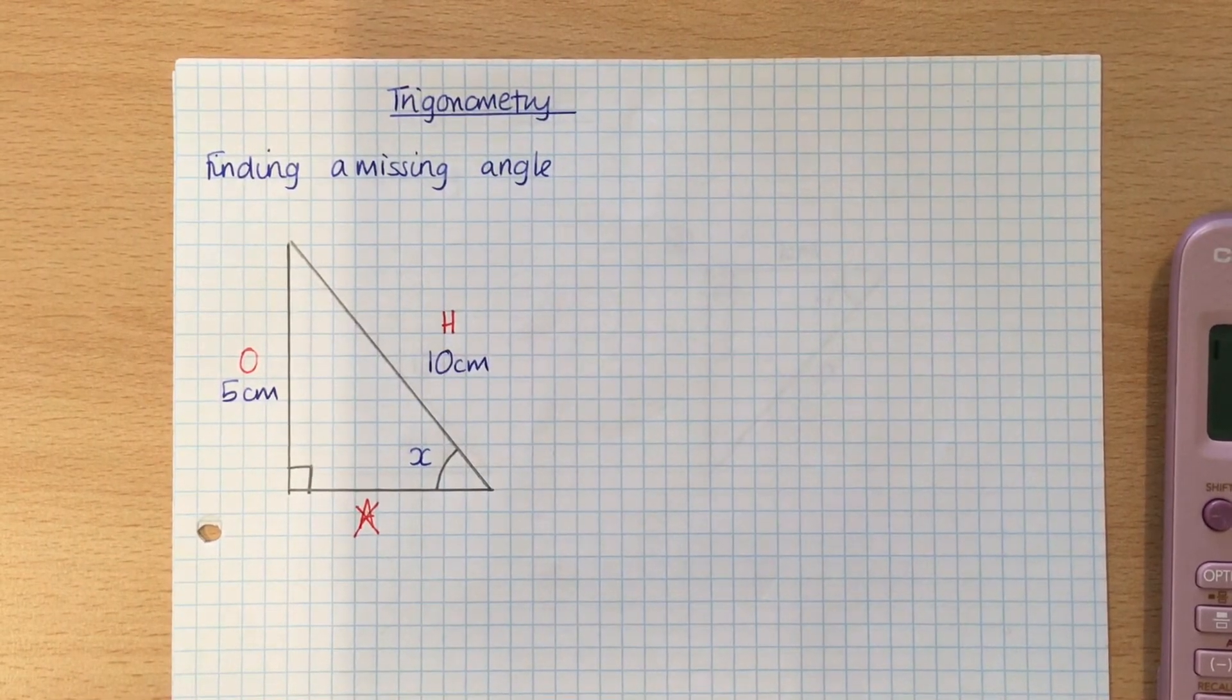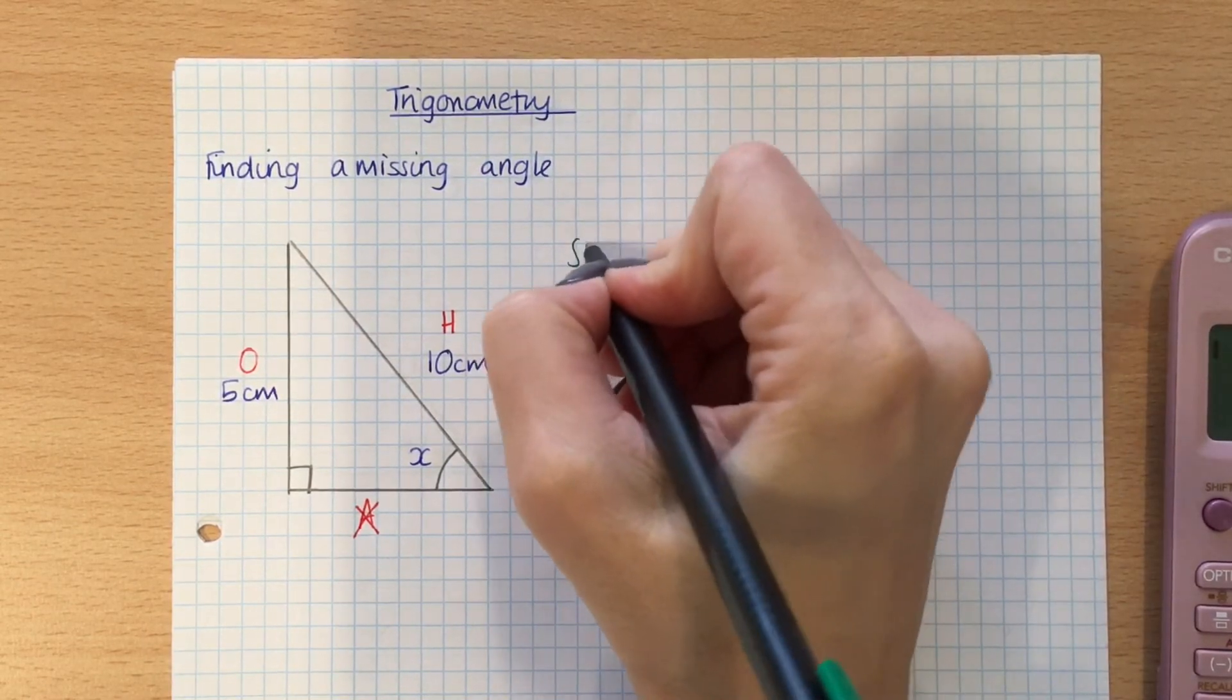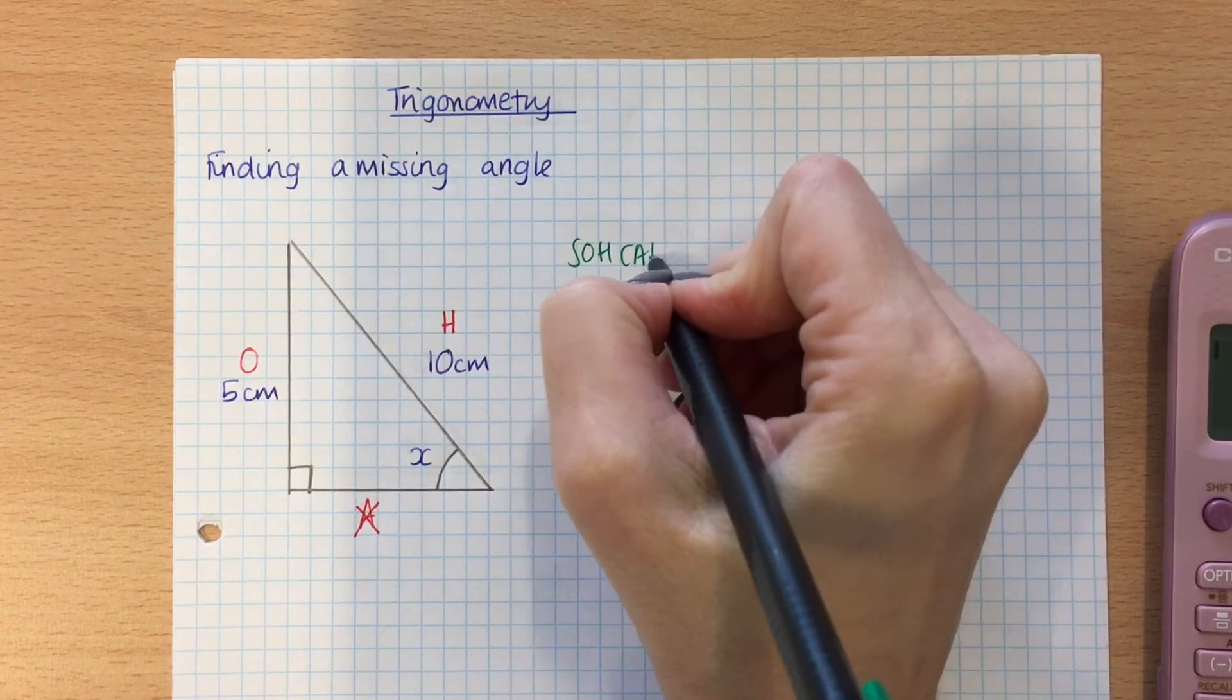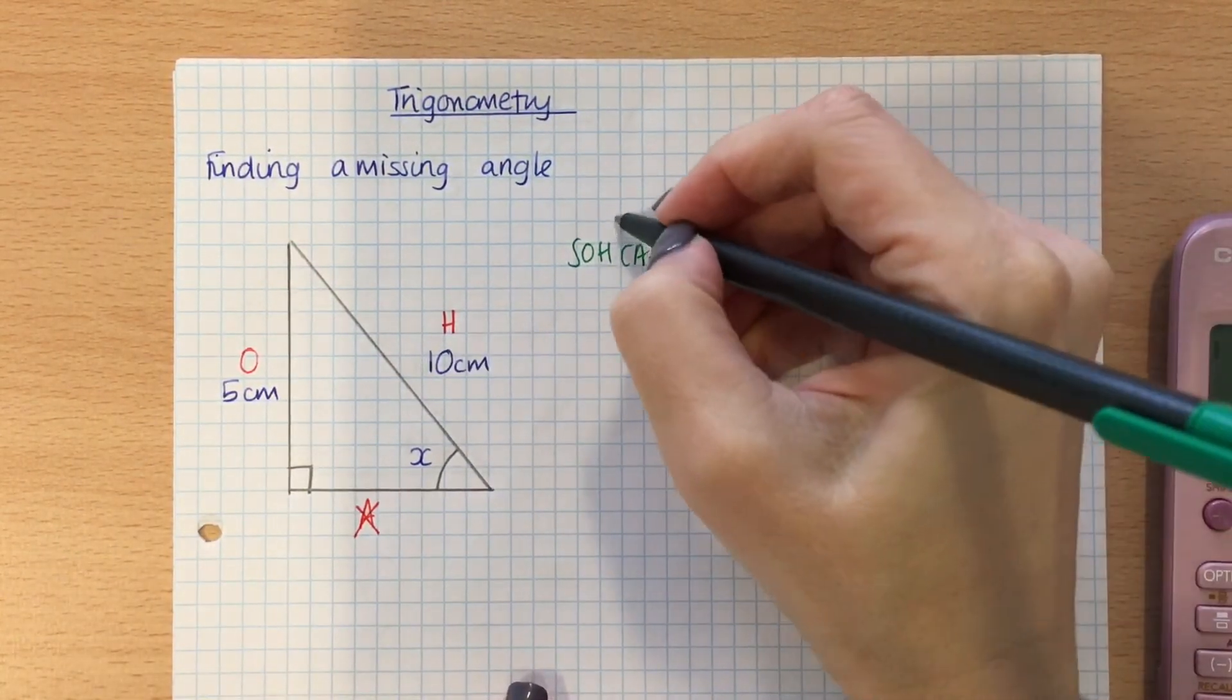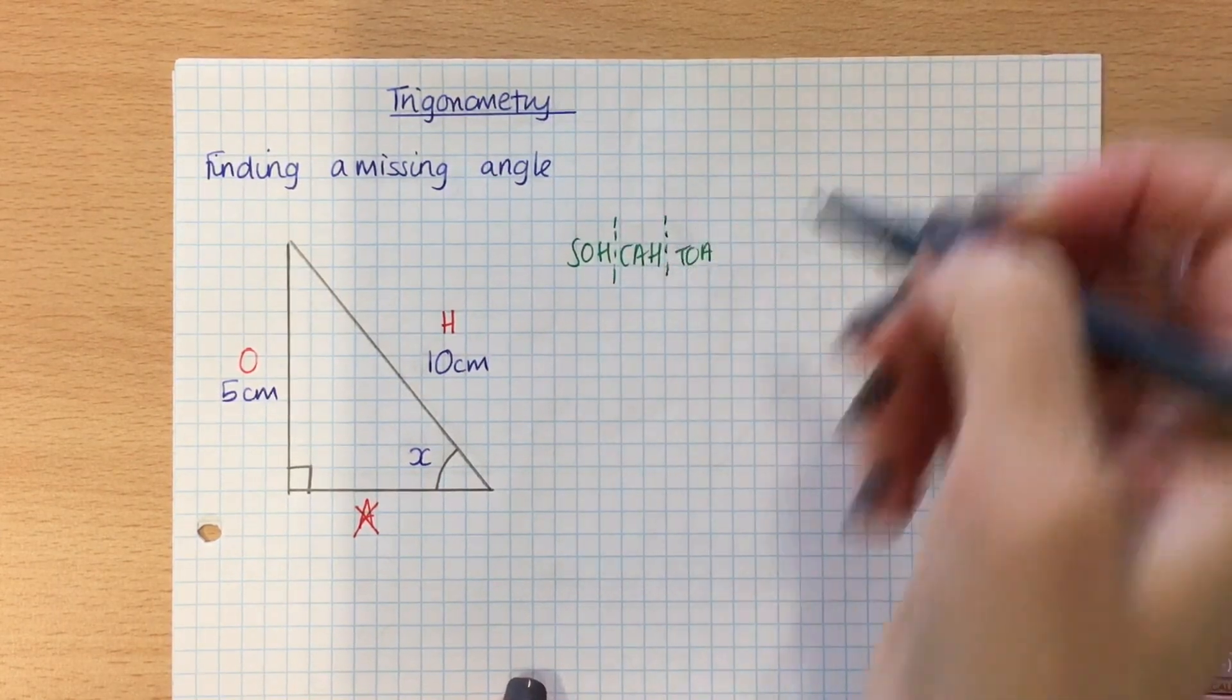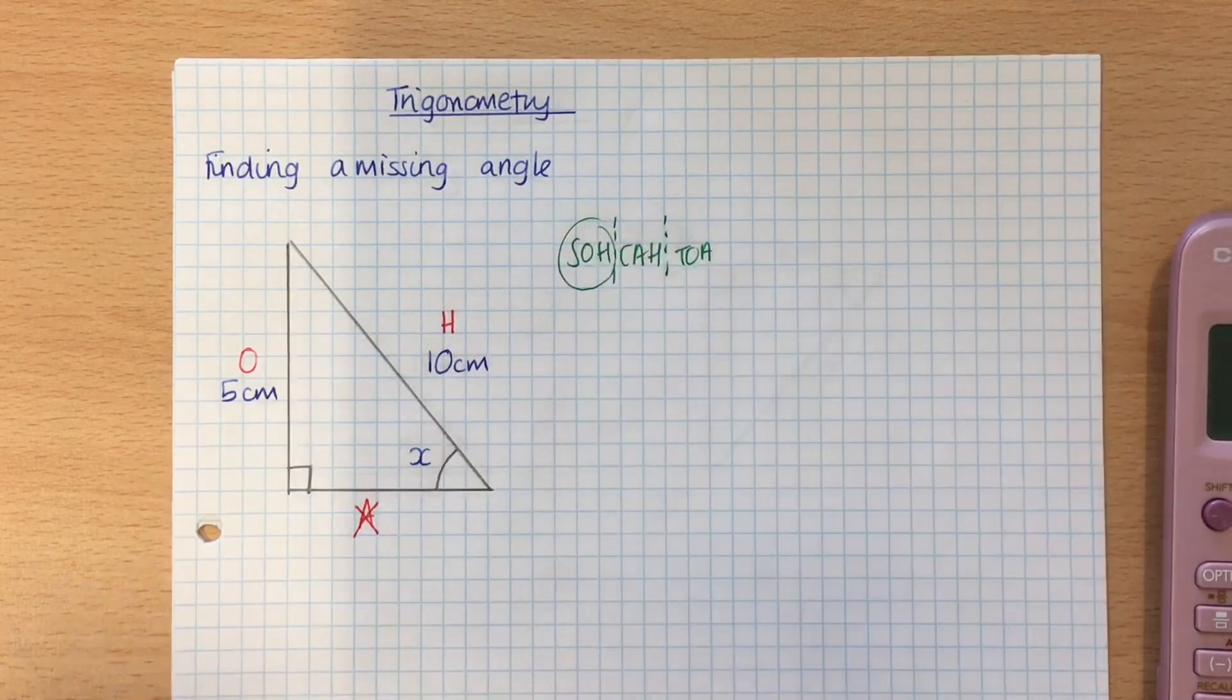This is where it comes back to this special word that we always use in trigonometry, which is SOHCAHTOA. So if we're working with O and H, which part of SOHCAHTOA am I going to be using? Yeah, I hope you all said SOH.